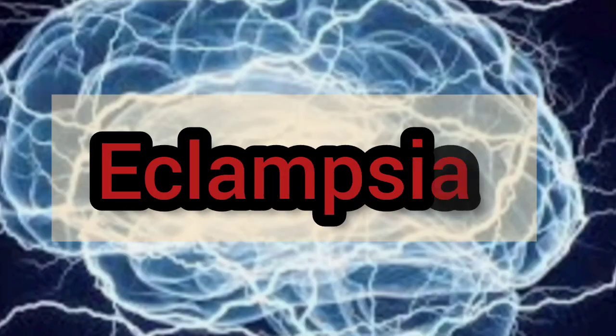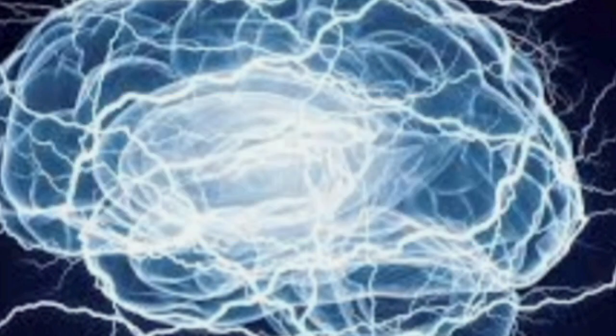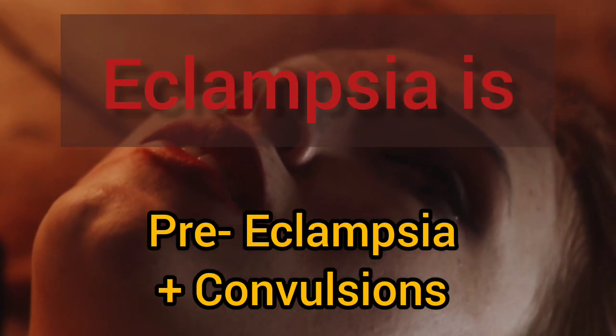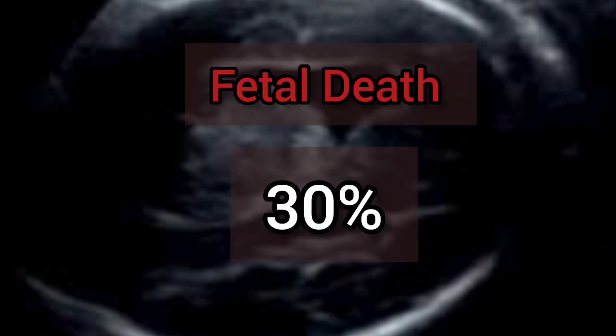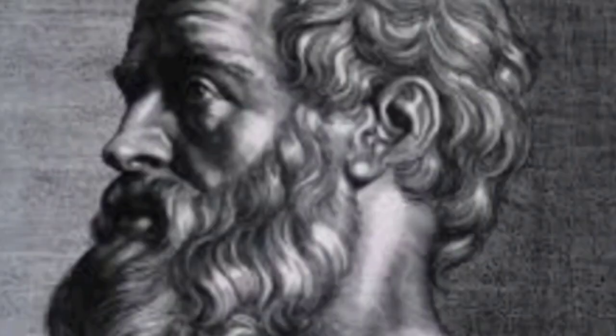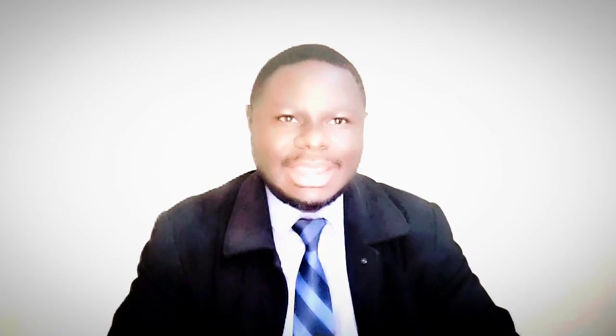Eclampsia is when there is onset of one or more convulsions in a woman with preeclampsia in the absence of any other neurological or metabolic disease. It can appear during pregnancy, delivery, and after childbirth. It is an extreme obstetrical emergency affecting 5 in 10,000 women, with a maternal mortality rate of 2% and fetal mortality rate of up to 30%. The Greek word eclampsia means lightning, and the condition was first described by Hippocrates in the 5th century BCE, though the word eclampsia was coined by Varandaeus in the 1619 treatise of gynecology.